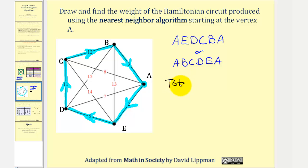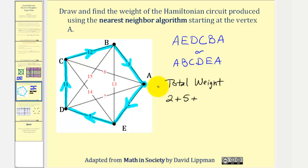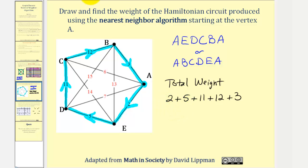Now to find the total weight: edge AE has a weight of two, edge ED a weight of five, edge DC a weight of eleven, edge CB a weight of twelve, and edge BA a weight of three. So the total weight would be thirty-three.